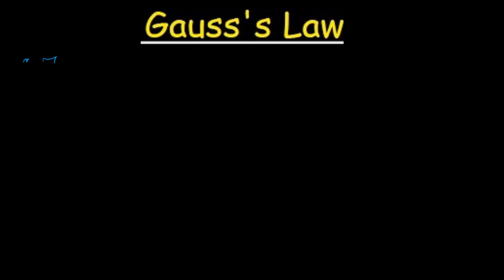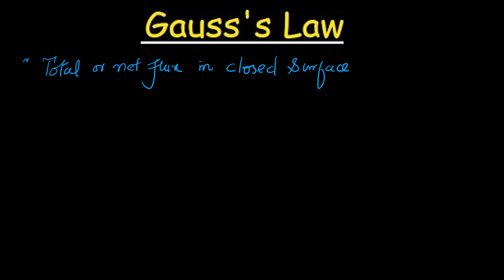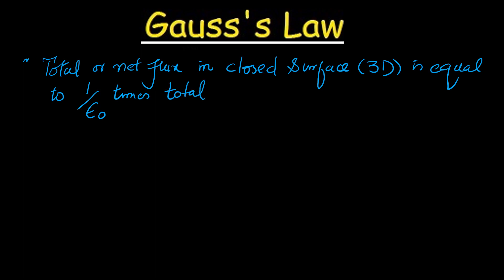We can write the statement of Gauss's law as: Gauss's law states that the total or net flux in a closed surface — usually these closed surfaces are three-dimensional — is equal to 1 over epsilon naught times the total amount of charge enclosed in it.